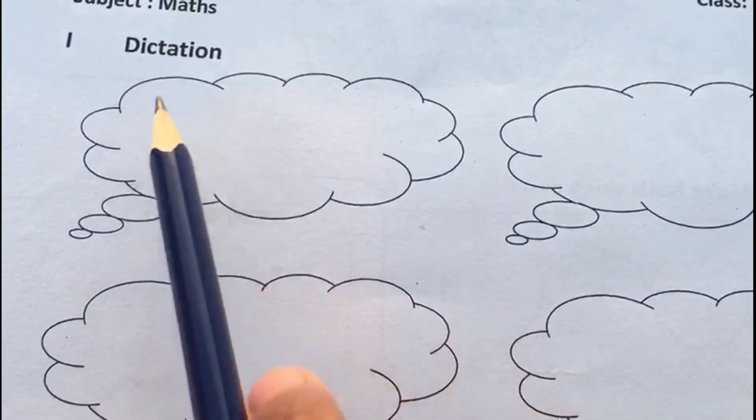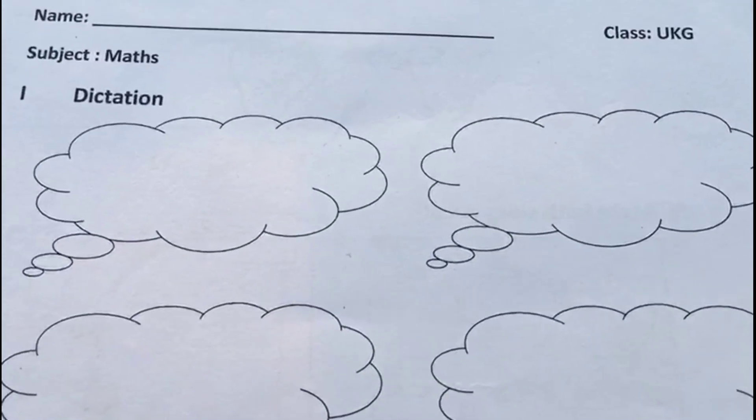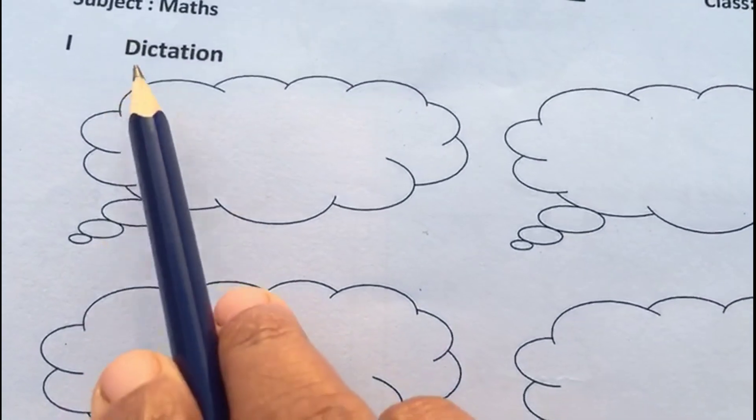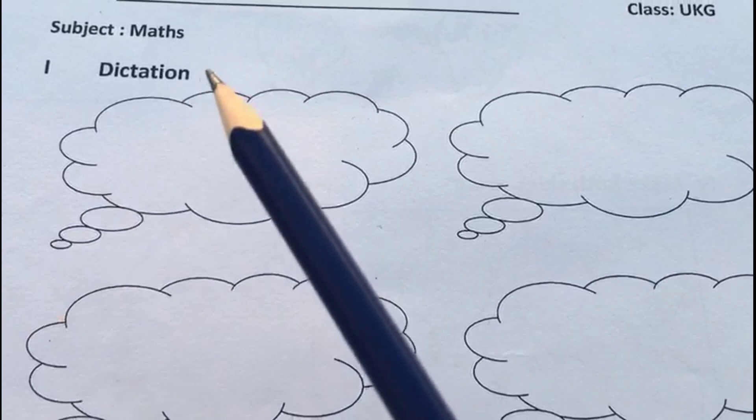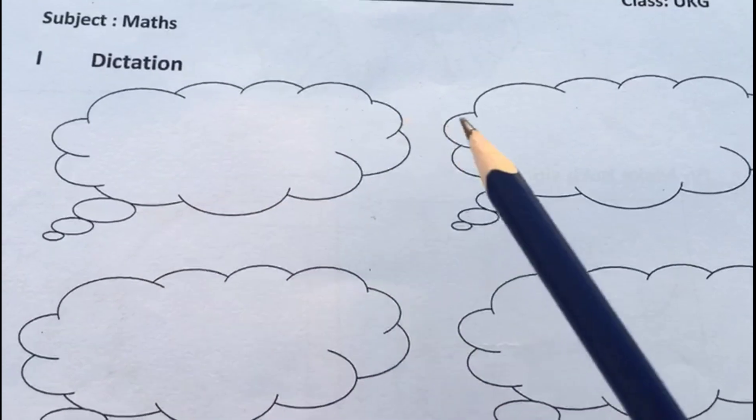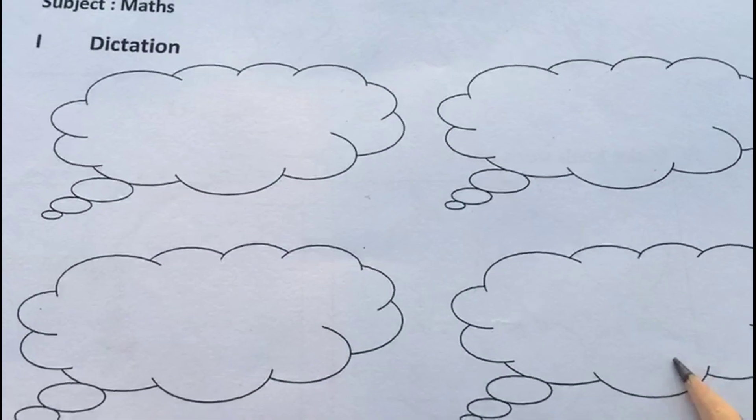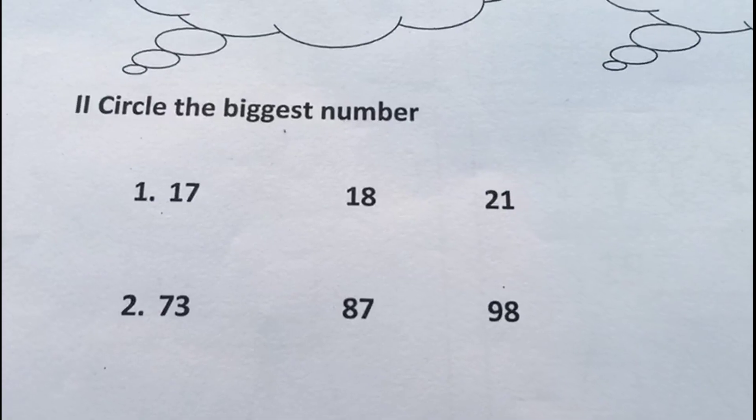We can dictate a number. The child should write the number in the given boxes, clouds. In UKG we are covering numbers 1 to 100, so we can dictate any four numbers from 1 to 100. This question is to assess your child's number identification.